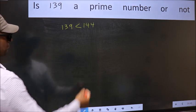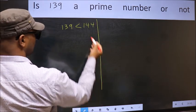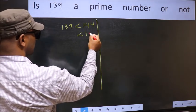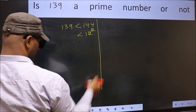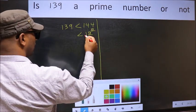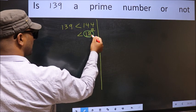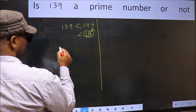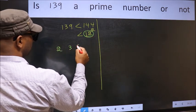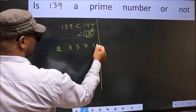Next, 144 is nothing but 12 square. Now you write all the prime numbers less than this number, 12. They are 2, 3, 5, 7 and 11.